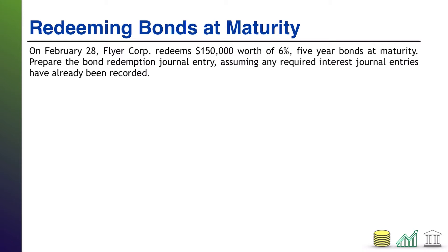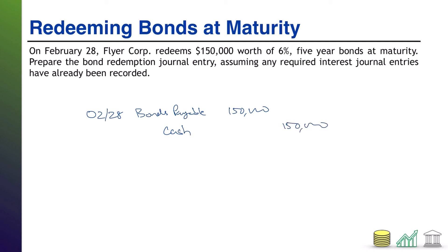Welcome back. What does it look like when we redeem a bond at maturity? On February 28th, we are getting rid of the bonds payable worth $150,000. Remember, bonds payable are always on your books at the amount of the principal, which is $150,000 in this case. At maturity, we pay it off by simply paying that principal, and that is our entire journal entry.